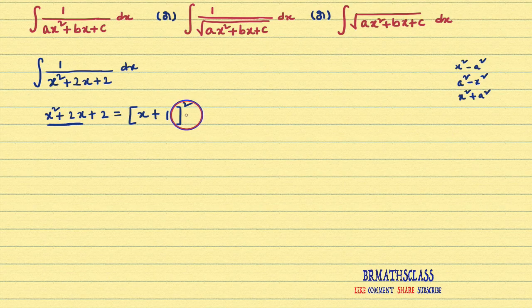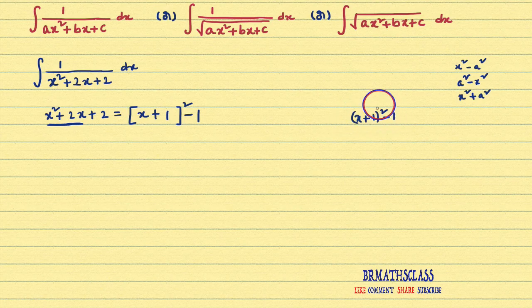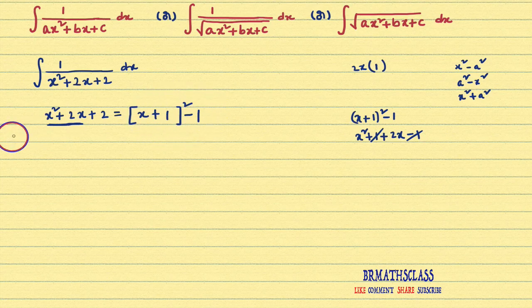Plus 1 whole square minus — irrespective of what sign is there here — minus only, minus square of this number. Square of this number: 1 square is 1. If you simplify all these expressions, you will get x square plus 2x. You can check: x plus 1 whole square minus 1 — expand: x square plus 1 plus 2x minus 1 — plus 1 minus 1 will get cancelled, giving x square plus 2x. So x square plus 2x can be written like this. What is remaining? Plus 2 is remaining, so I will write plus 2 here. I hope you are understanding.